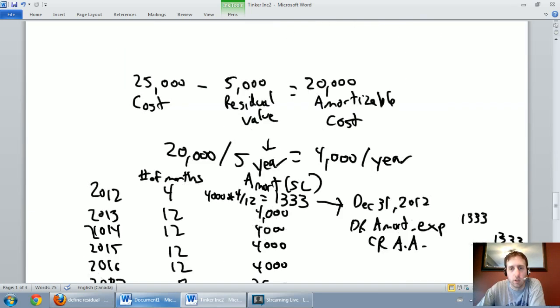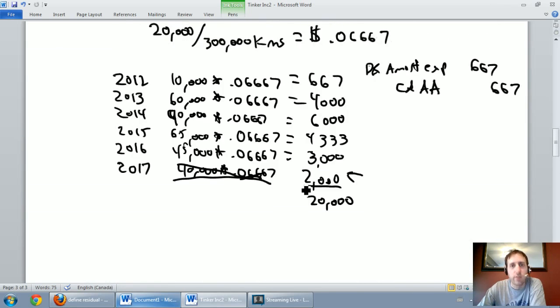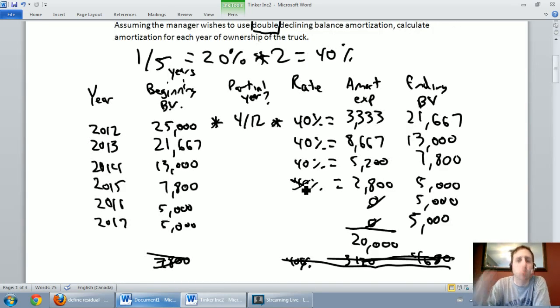Comparing our three methods, going all the way to the bottom. Straight line, same amortization every year for each full fiscal year. Units of production varies with our production. If we drive more kilometers, we amortize more. If we drive fewer kilometers, we amortize less. Last, double declining balance is aggressive amortization. It amortizes your asset quickly. You can see it's a much higher level of amortization in the early years than the other two. And it fully amortizes the asset much more quickly. So, those are the three methods of amortization that are taught in most intro accounting classes. Certainly, those are the three that I touch on in a big way in my class. And I hope you've learned and understood all of them.